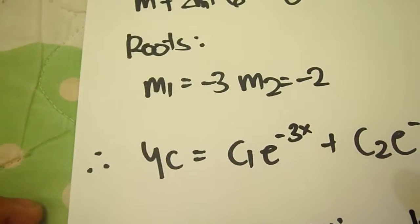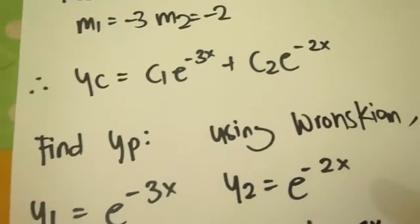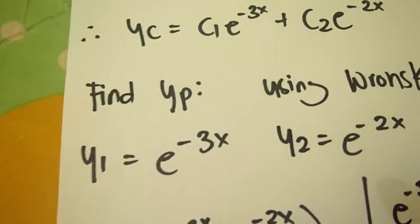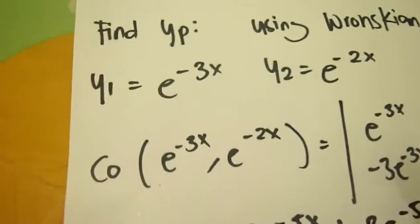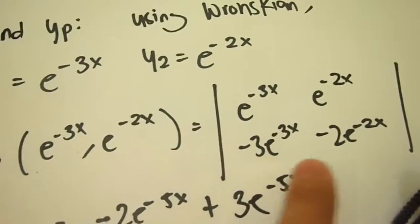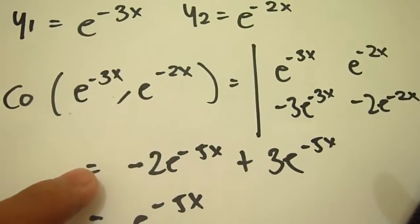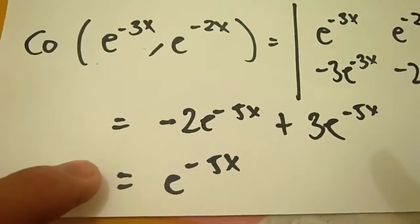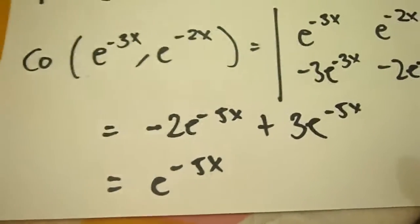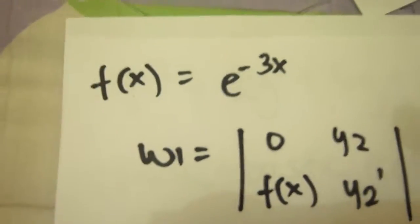After we get yc, we need yp so that we can get our general solution y. To get yp we're going to use the Wronskian method. We identify y1 equals e to the negative 3x and y2 equals e to the negative 2x, and set up the Wronskian matrix. After computing it, we get negative 2e to the negative 5x plus 3e to the negative 5x, which gives us e to the negative 5x as our Wronskian. Then we note f(x) equals e to the negative 3x.